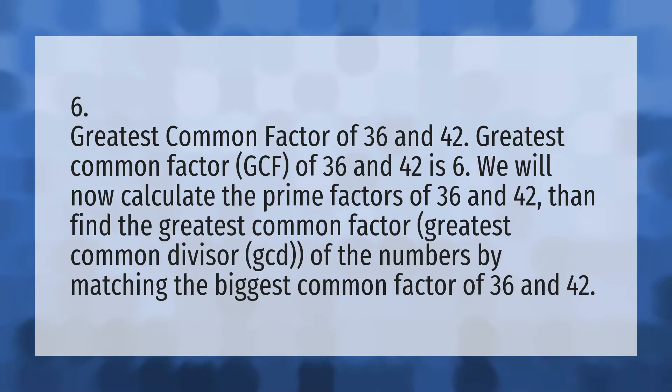Six. We will now calculate the prime factors of 36 and 42, then find the greatest common factor, or greatest common divisor (GCD), of the numbers by matching the biggest common factor of 36 and 42.